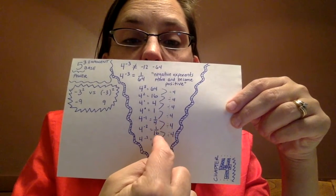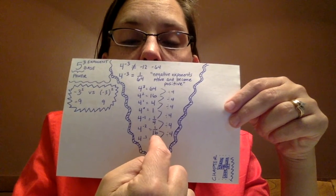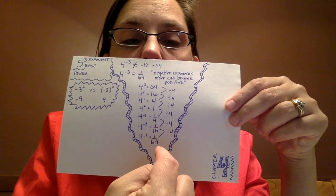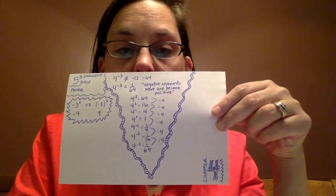If we divide by 4 again, we get 4 to the negative 2, which is 1 over 16. And if we divide by 4 again, we get that 4 to the negative third power, which is 1 over 64. So this section is all about negative exponents.